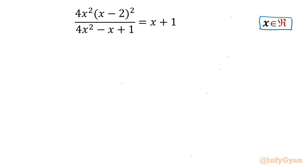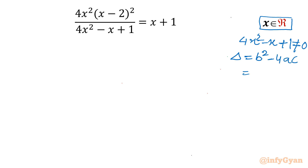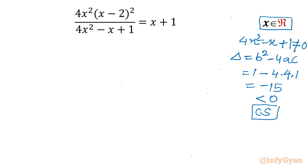Let's get started by noting that the denominator cannot be 0. So 4x² minus x plus 1 should not equal 0. Let's check the discriminant: b² minus 4ac gives minus 1 squared, so 1 minus 4 times 4 times 1, which is 1 minus 16 equals negative 15. Since this is negative, only complex values of x make it zero, so there is no constraint for real solutions.